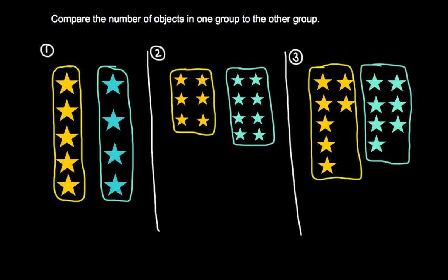Hi, mathematicians. Today we are going to find out how to compare the number of objects in one group to the number of objects in another group. When we compare, we are looking at one group and counting how many are in that group, then counting how many are in the other group. Once we've made a count, we can decide which group is greater than, less than, or equal to the other group.